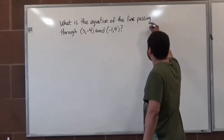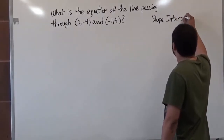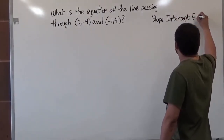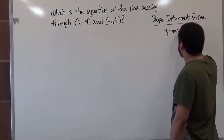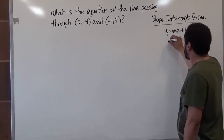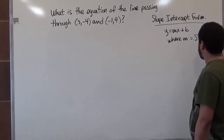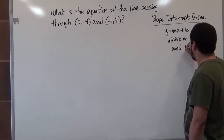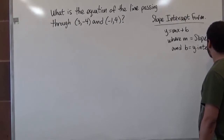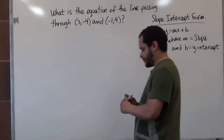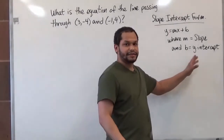The slope-intercept formula is y equals mx plus b, where m is the slope and b is the y-intercept. Because b is the y-intercept, it's not going to be a coordinate — it's just going to be the value of y at the y-intercept.